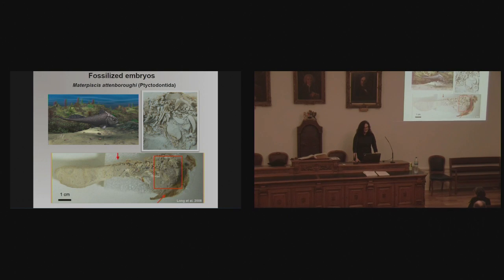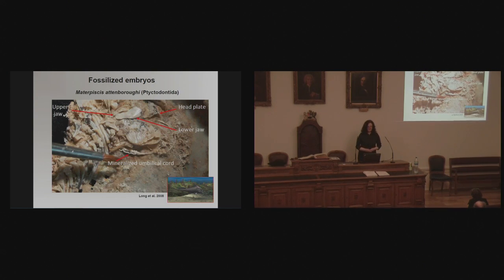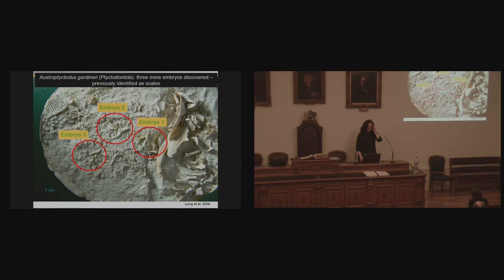In 2006, my colleagues Kate and John, with their acid preparation technique, found in this ptyctodon called Materpiscis attenboroughi — named after David Attenborough — an embryo just in this area in this adult female. We have the backbone, the jaws and some headplates of the embryo, and this mineralized umbilical cord. So for the first time, even though we'd known for some time that ptyctodontids had claspers, it wasn't until 2006–2008 that we knew the result was embryos.